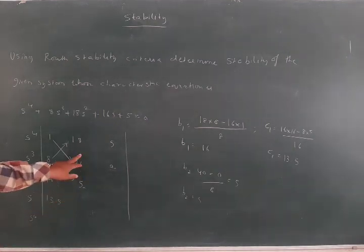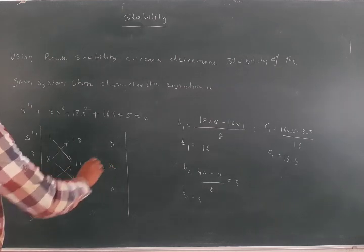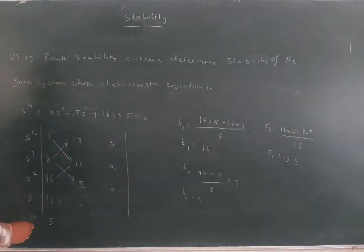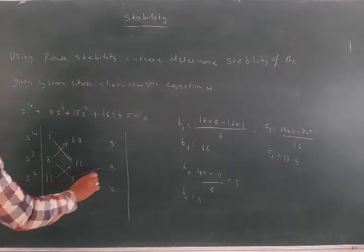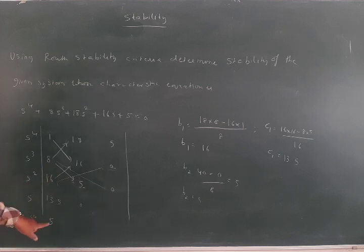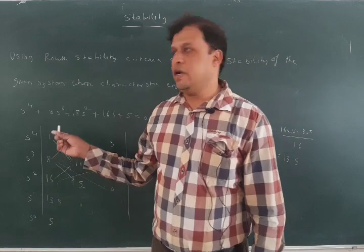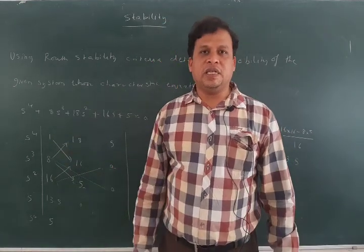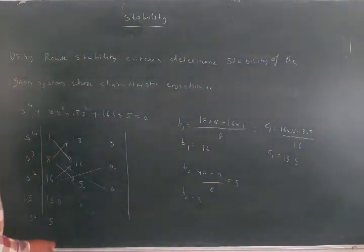For c2 and further values, since those terms are zero, they become 0. The last row s^0 contains An = 5. Now observing the first column of the Routh array: 1, 8, 16, 13.5, 5 — all values are positive. According to Routh's stability criterion, since there are no sign changes in the first column, the system is stable.